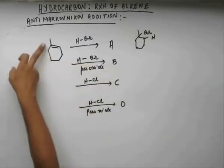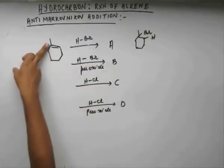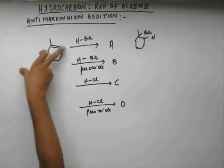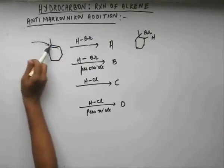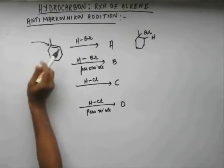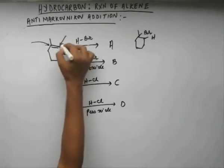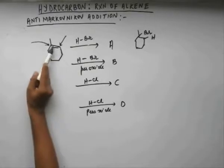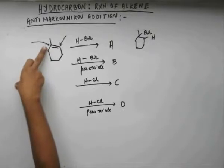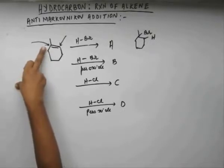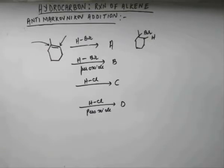Because carbocation ultimately will be more stable on more substituted carbon, meaning carbon getting attached to more carbon. This carbon is more substituted carbon because it is attached to three carbons. This carbon is less substituted carbon because it is attached to only two carbons. So more substituted carbon will have a more stabilizing effect on carbocation. So carbocation will be more stable on more substituted carbon, so bromine will get attached to more substituted carbon.